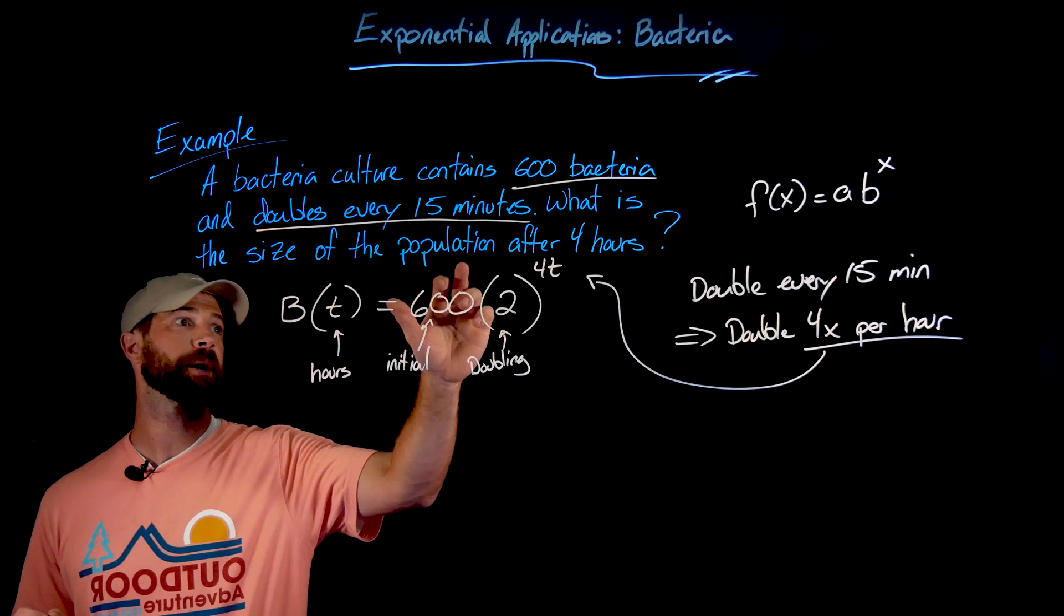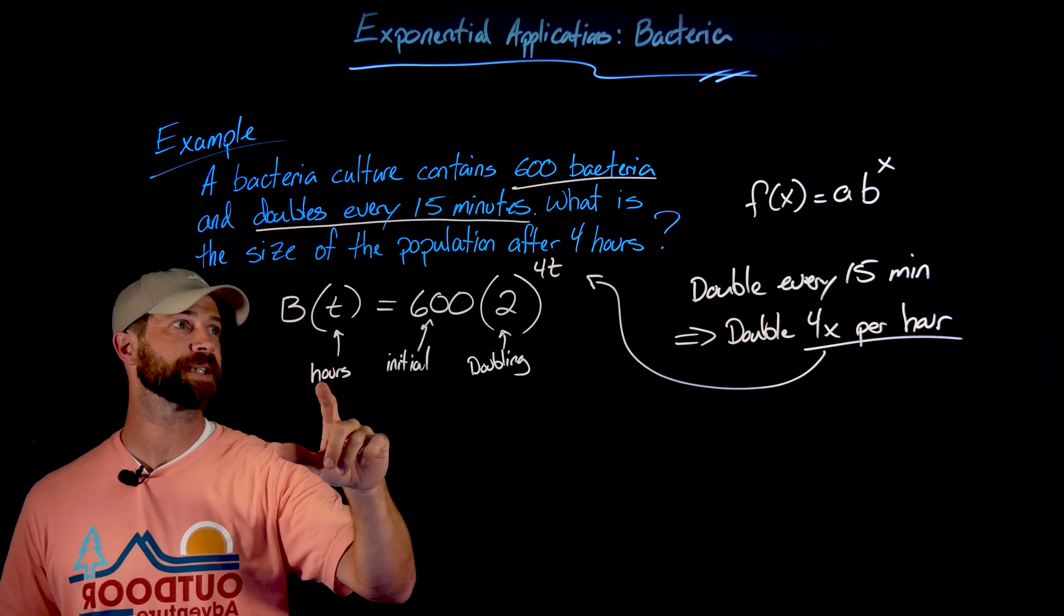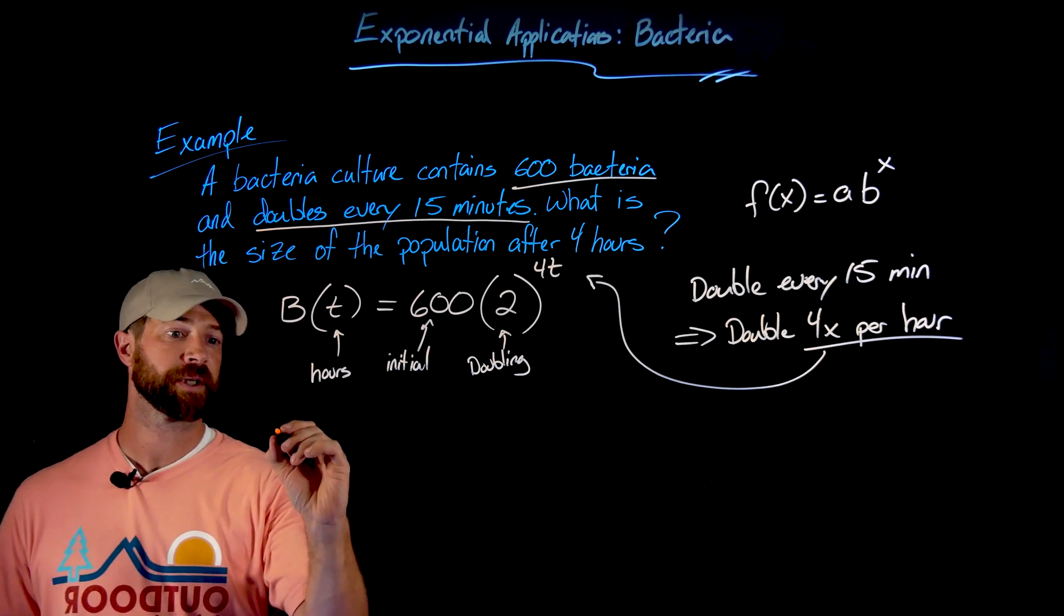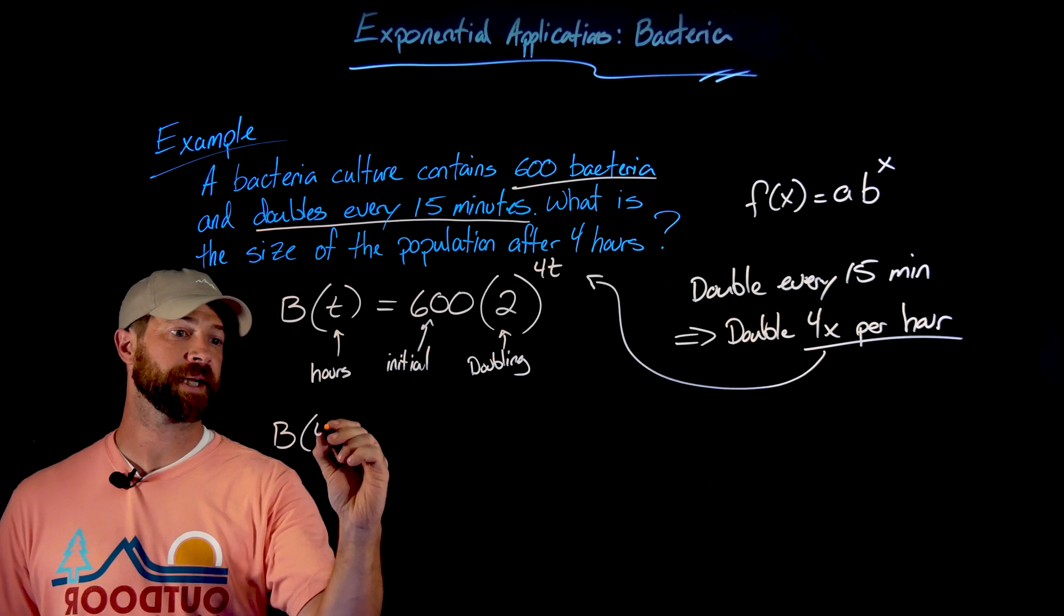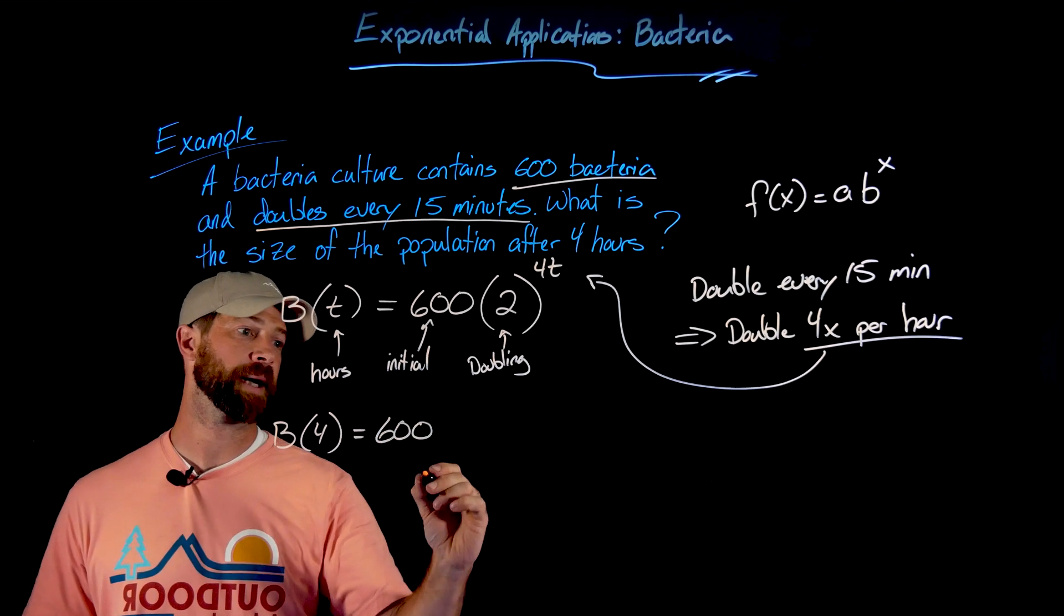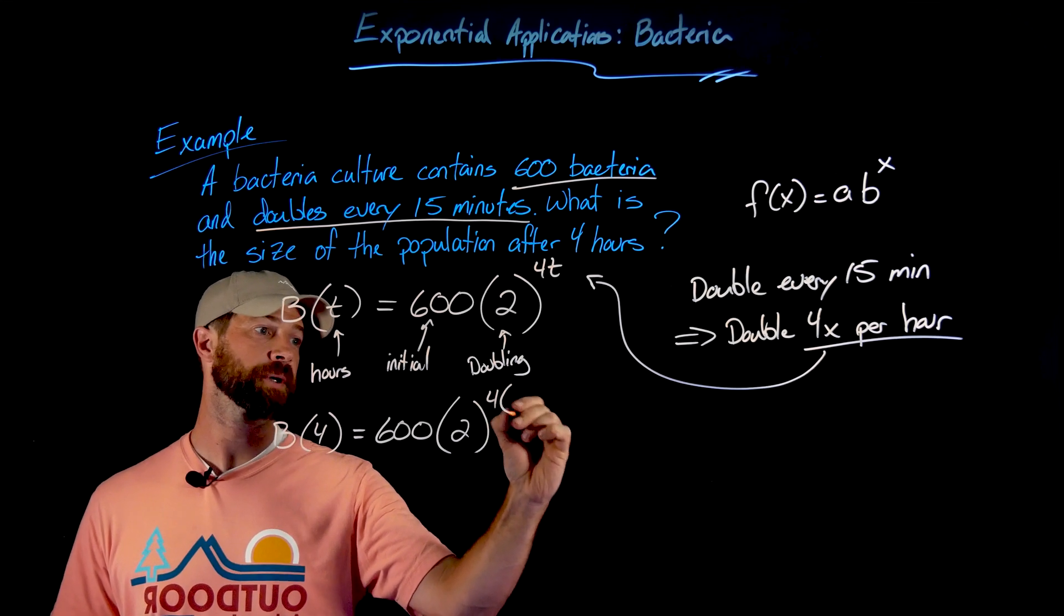We want to know the size of the population after four hours. The beautiful part about choosing hours in this case is the fact that I can just input four into this function. So the size of the bacteria after four hours is represented by 600, the initial amount, times this doubling factor, and then four times per hour times four hours...